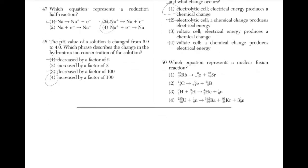Which equation represents a nuclear fusion reaction? Fusion is when two smaller nuclei combine to form a larger nucleus. Fission is when a large nucleus is split into two smaller nuclei. This makes the answer 3, because two hydrogen nuclei are combined to form a helium nucleus.